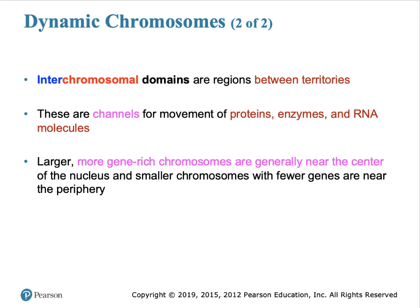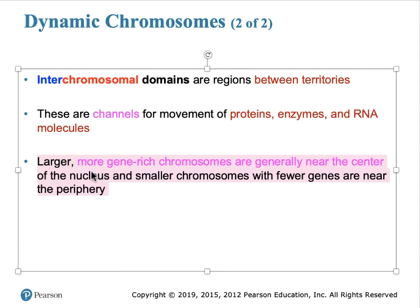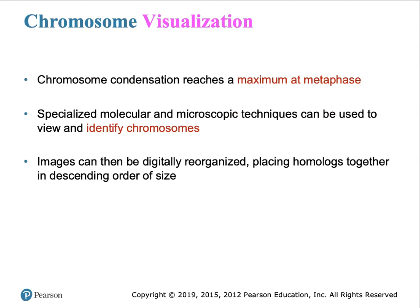More recent analysis shows there are interchromosomal domains between each territory—equivalent canals or channels that allow movement of proteins, enzymes, and RNA molecules from within the chromosome mass to various other locations, including nucleopores. Interestingly, gene-rich chromosomes with a high density of genes are generally located near the center of the nucleus, while smaller chromosomes with fewer genes are located in the periphery.